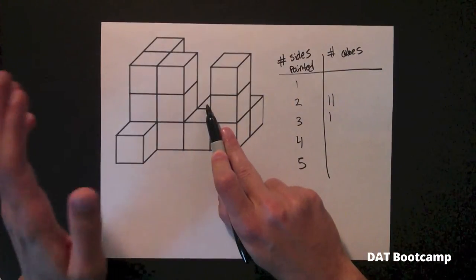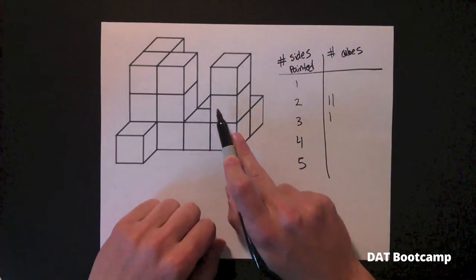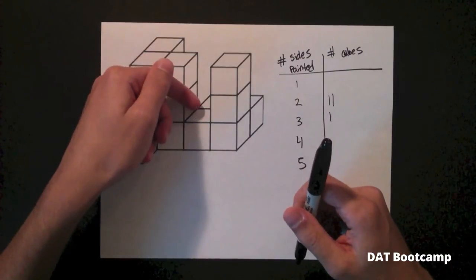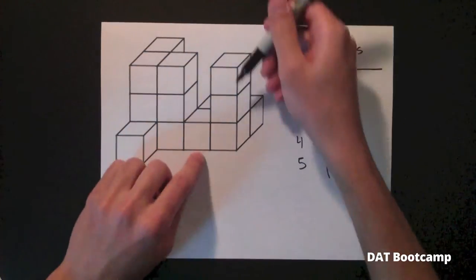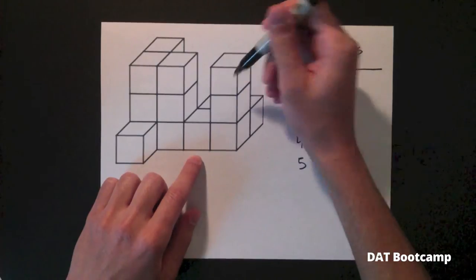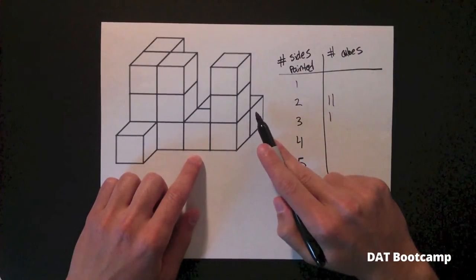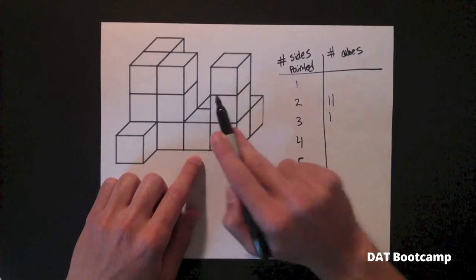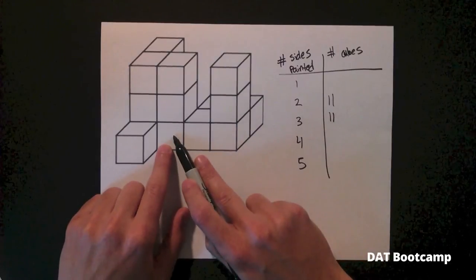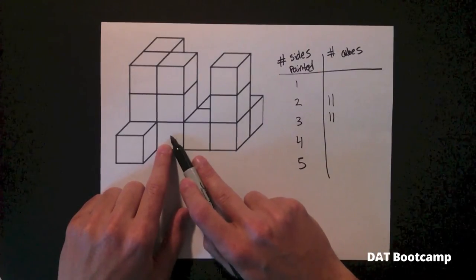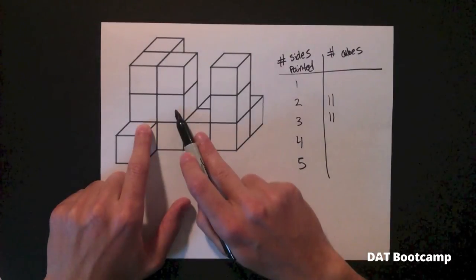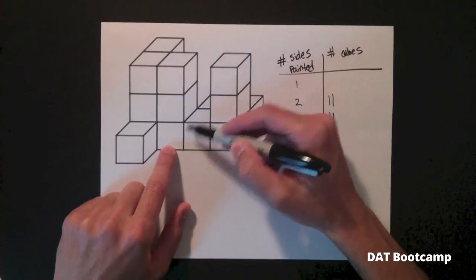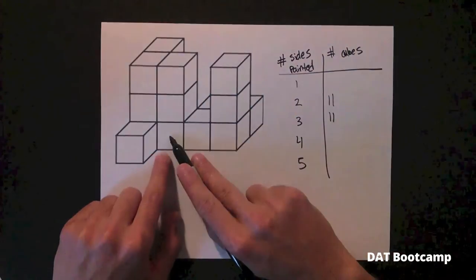This next cube requires a little spatial thinking. It has the top side painted, the left side painted because there's nothing resting against it, and the back side painted. But it doesn't have the right side because a cube is resting against it. So this cube has three sides painted. Moving to the next cube: it has this side painted, it doesn't have the right, left, or top, but it actually has the back side painted too because there's no cube resting against it on the back. So this cube has two sides painted.